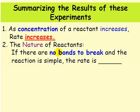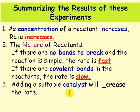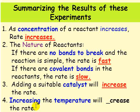The nature of the reactants: if there are no bonds to break and the reaction is simple, the rate is fast or slow? Fast. If there are covalent bonds to break in the reactants, the rate is slow. Adding a suitable catalyst will do what to the rate? Increase of course. And increasing the temperature will also increase the rate. So this summarizes the results of these experiments.